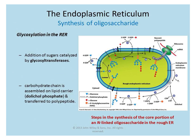The rough ER is important for glycosylation — this is one of the first areas where sugars are added to proteins. Many different types of membrane proteins require glycosylation for function, serving as binding sites, receptors, or markers for specific cell types on the cell surface. When glycosylated proteins are made, these sugar groups, or oligosaccharides, will first be attached in the rough ER.